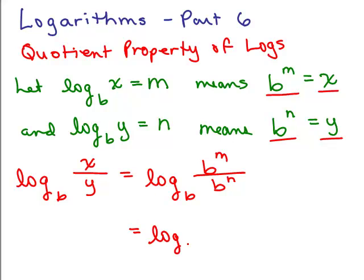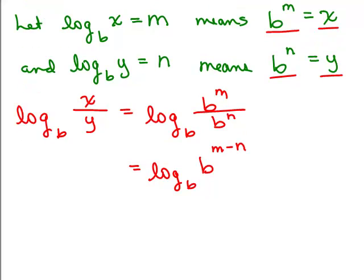Now I'm going to use the quotient rule with exponents having the same base. I've got B to the M over B to the N, which really means B to the M minus N. B to the what equals B to the M minus N? This base is the same as that base, so the answer is just the exponent, which is M minus N.